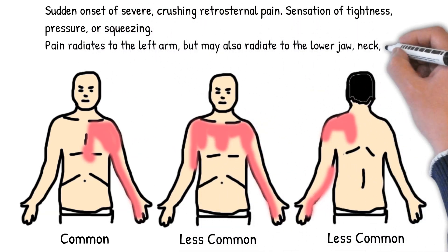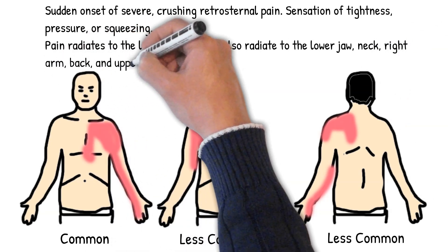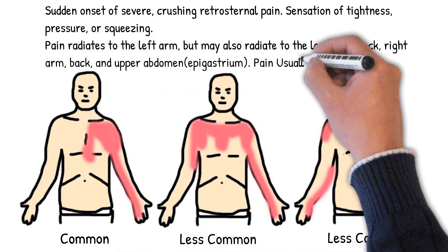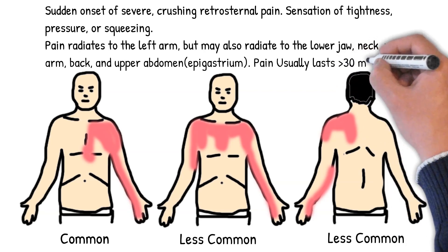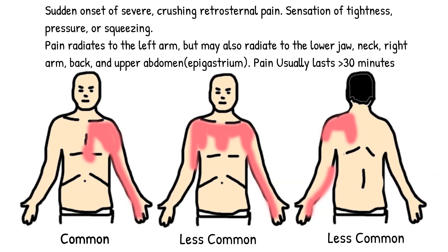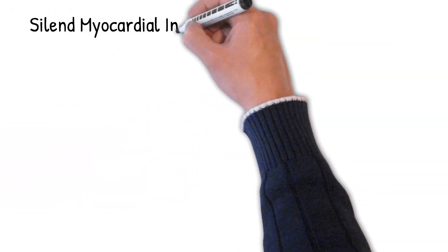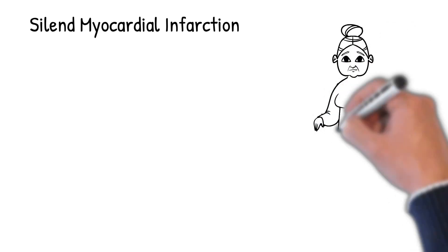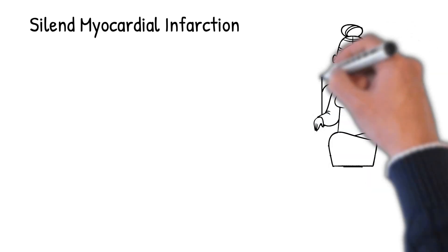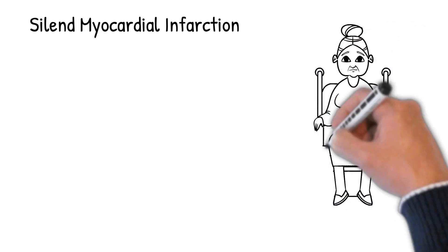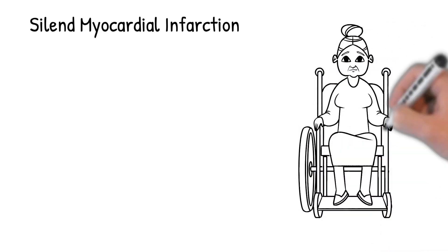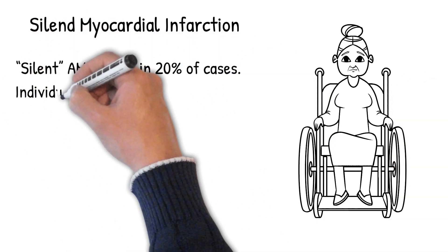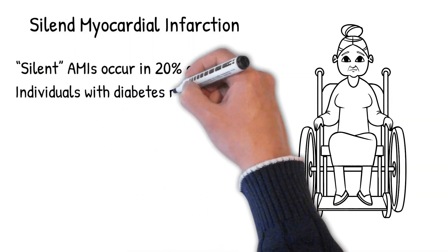Pain is not relieved by nitroglycerin. Associated manifestations include sweating, diaphoresis, anxiety, and hypotension. Silent AMIs occur in 20% of cases, meaning myocardial infarction without symptoms, more likely in older adults and individuals with diabetes mellitus who frequently have neuropathies and cannot feel pain.